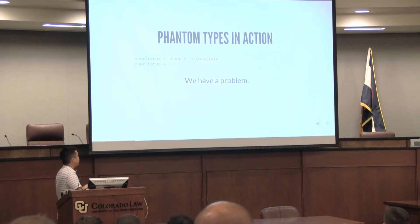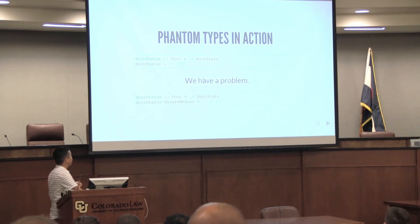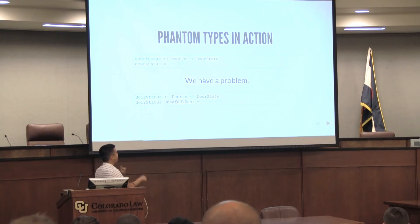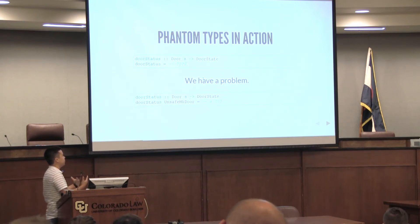So we have a problem now. What if you want to get the door status from a door? We can try pattern matching on the door, but we can't really use S. S isn't a value — S is a type. We can't just put in S. So this is an issue we have with phantom types as a tool. It's useful in some cases, but in this case it seems to fail us.